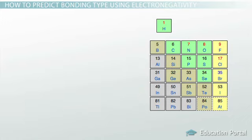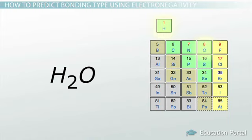For example, looking at the atoms in a water molecule, hydrogen and oxygen are located fairly closely on the periodic table, so there is only a slight difference in electronegativity. Since the oxygen atom has a higher electronegativity than the hydrogen atoms, the electrons spend more time around oxygen.